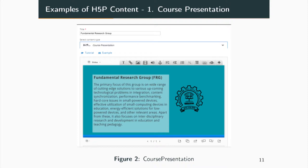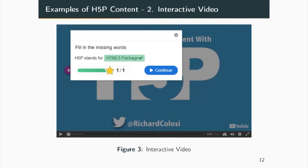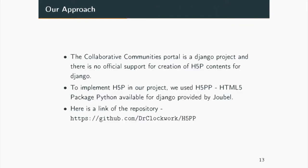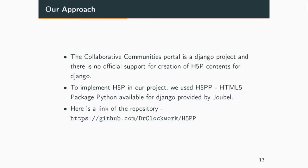Here are some examples: a course presentation created on the official website H5P.org, and another one — an interactive video. Our approach for integrating this into the Collaborative Communities Portal was as follows: since the portal is a Django project and there is no official support for H5P content creation on Django, after a long search we found an open-source plugin called H5PP — HTML5 Package for Python. It is available for Django but is currently in beta stage.